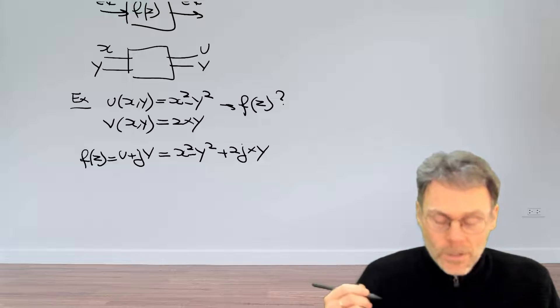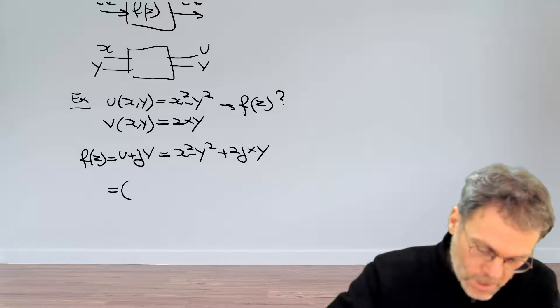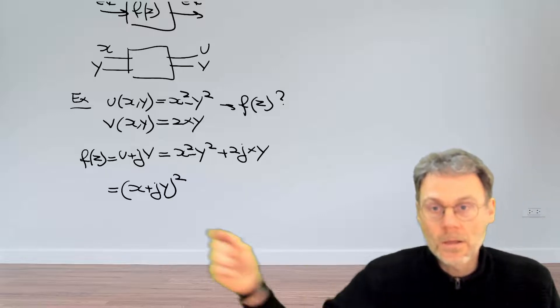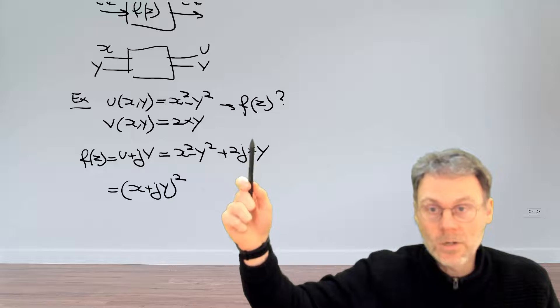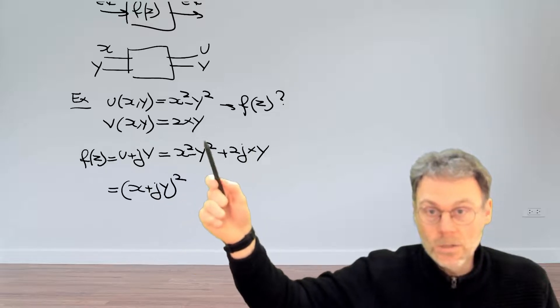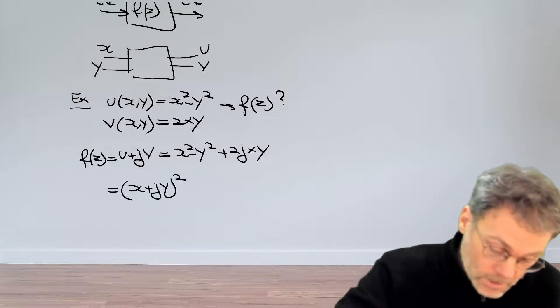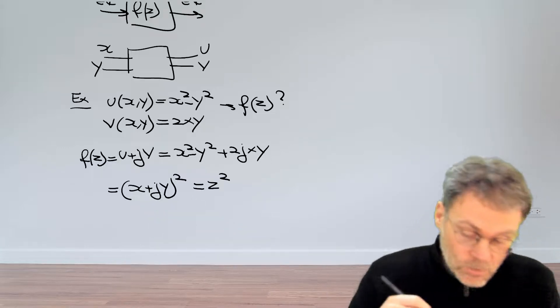Now with a little bit of thought you will soon realize that this is actually x plus jy squared, right? So this double product here ends up there and then j squared is minus one so that also makes sense and since we now have here x plus jy that's actually just z squared.